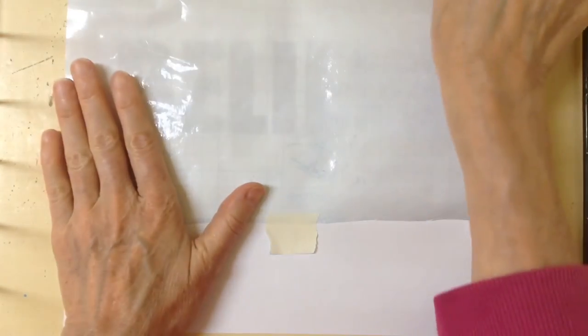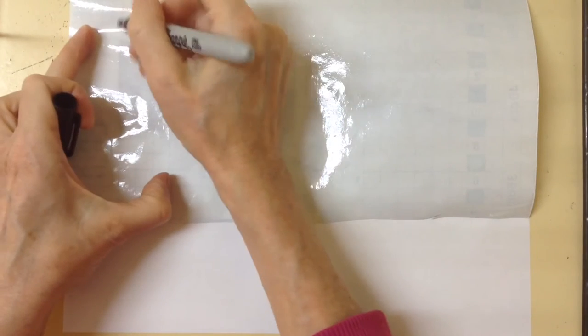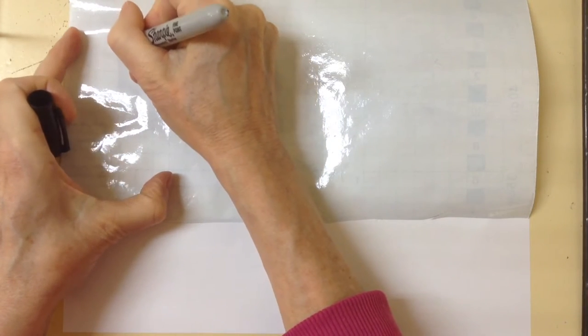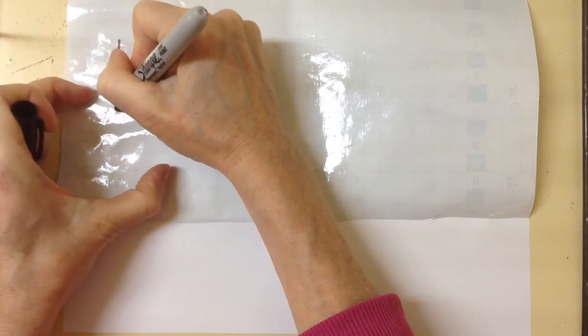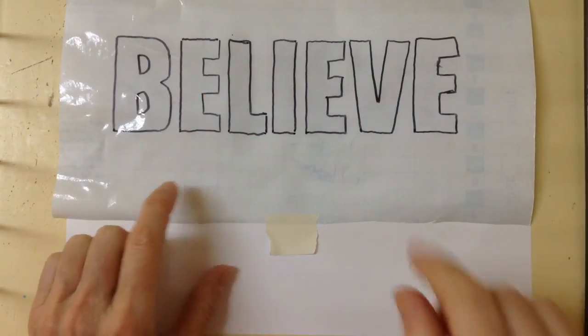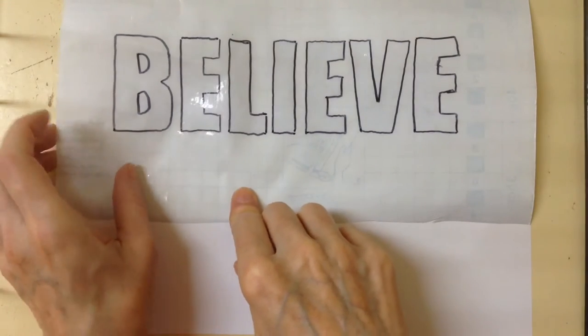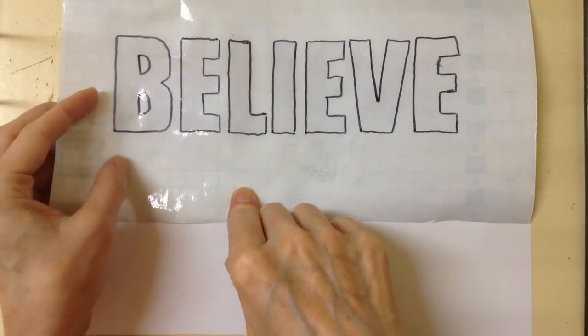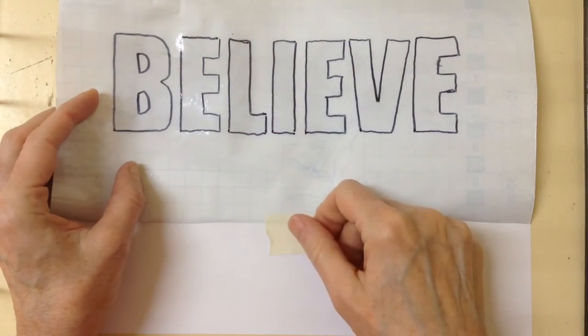So what I want to do is trace the word believe. So I'm going to go with my Sharpie and I'm going to very carefully trace the letters. If you have trouble seeing through the MacTac, you can actually mount this on a window so it will be easier to see the letters through it.